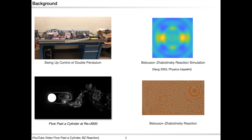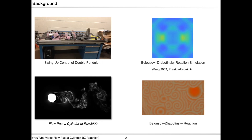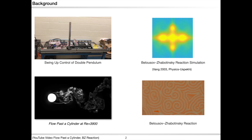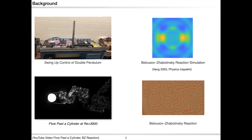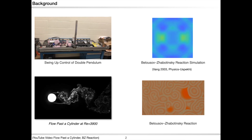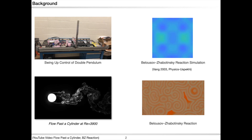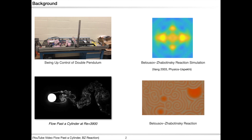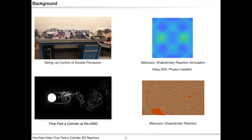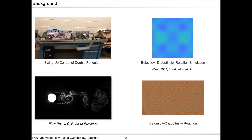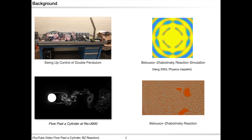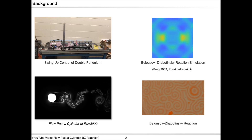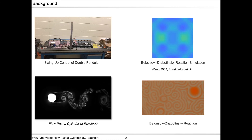For example, in robotics you might be interested in modeling a double pendulum and performing stabilizing control. In fluid dynamics, you might be interested in modeling some chemical reaction, for example the BZ reaction.